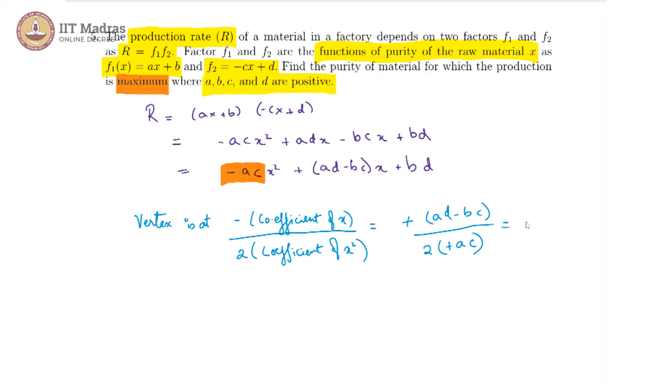So we get ad minus bc divided by 2ac is where we will get the vertex. And since we know that the maximum is going to occur at this particular x, we get x equals ad minus bc divided by 2ac.